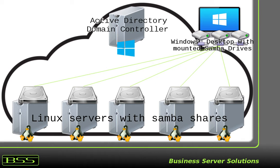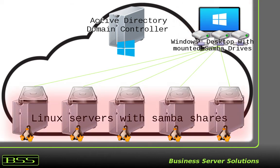So you see here the Active Directory domain controller. I will install Active Directory domain controller to Windows Server. Then you see here Windows desktop, which I will prepare, and also you see here a couple of Linux servers that I will install and configure Samba shares on.